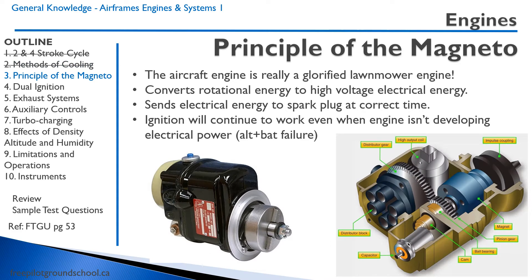Let's talk about the magneto. The last time you probably heard of a magneto was when working on your lawnmower — most lawnmowers are four-stroke engines and they have a magneto. The aircraft engine is basically a glorified lawnmower engine: it has a carburetor, it has magnetos, nothing fancy. Very few of them have anything electronic. The purpose of a magneto is to convert rotational energy from the engine into high-voltage electrical energy to power the spark plugs, and to send that electrical energy to each spark plug at the correct time. The big advantage is that the ignition continues to work even without electrical power from the alternator or battery — as long as the engine is running, it generates its own power.